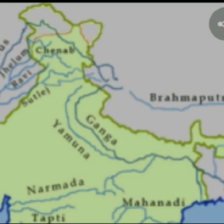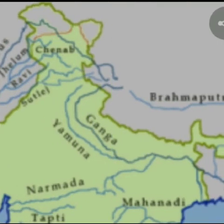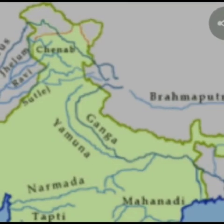Along with it, other rivers join the Indus in this region. In Ladakh, the rivers Shyok, Gilgit, Zanskar, Hunza, Nubra, and Shiger join it. As it moves forward and enters Pakistan, the river Jhelum joins it there.